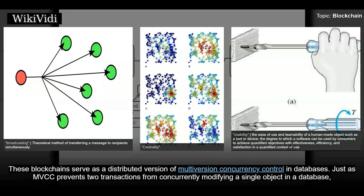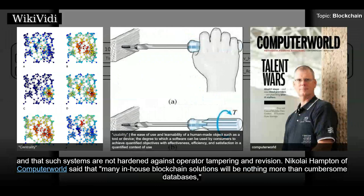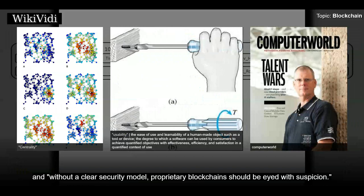Just as MVCC prevents two transactions from concurrently modifying a single object in a database, blockchains prevent two transactions from spending the same single output in a blockchain. Opponents say that permissioned systems resemble traditional corporate databases, not supporting decentralized data verification, and that such systems are not hardened against operator tampering and revision. Nikolai Hampton of Computerworld said that many in-house blockchain solutions will be nothing more than cumbersome databases and, without a clear security model, proprietary blockchains should be eyed with suspicion.